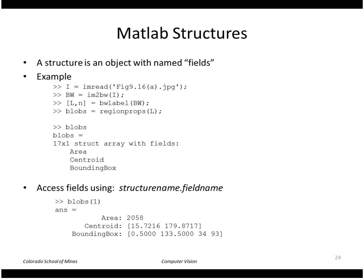A word about structures: a structure is an object with some fields. If we apply regionprops to label image L and get blobs, blobs is an array of 17 structures. Each structure element has three fields: area, centroid, and bounding box. We can access these fields by typing blobs(1) to get the first blob, then .area to access the individual elements.